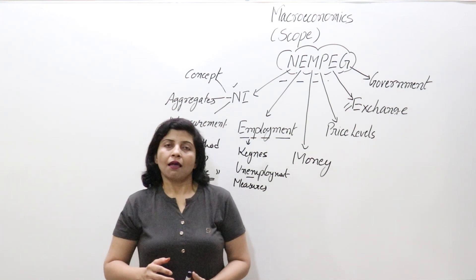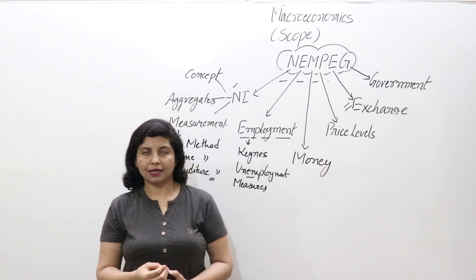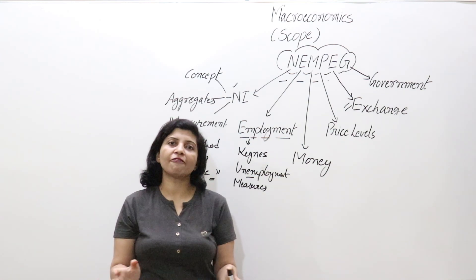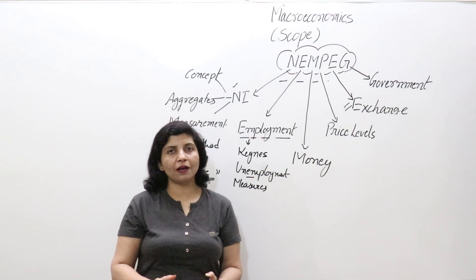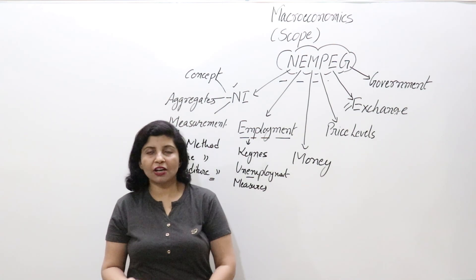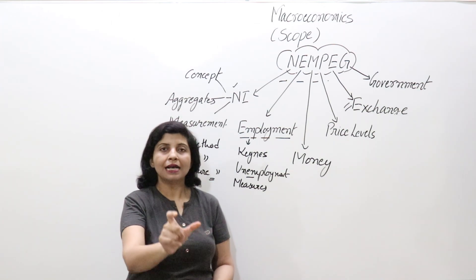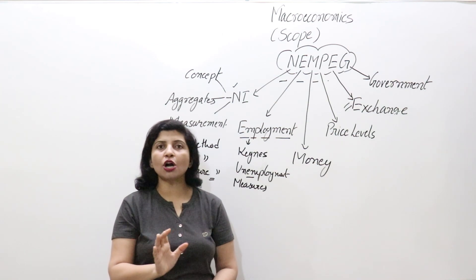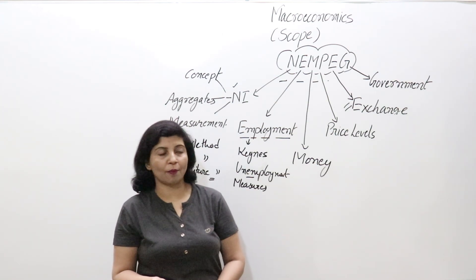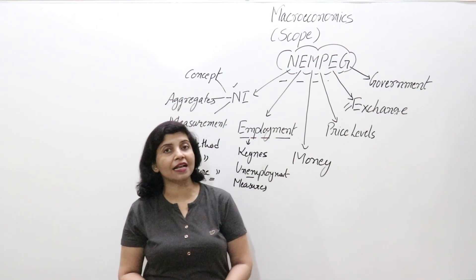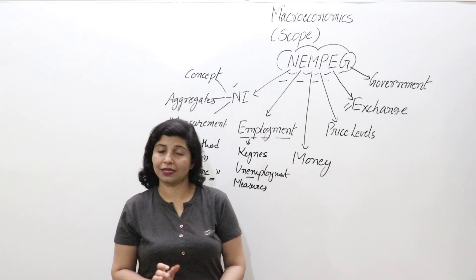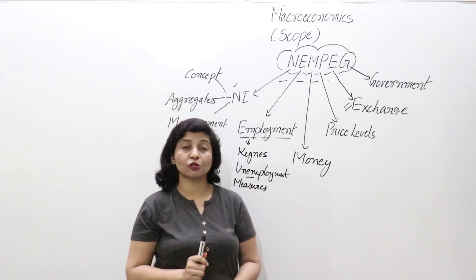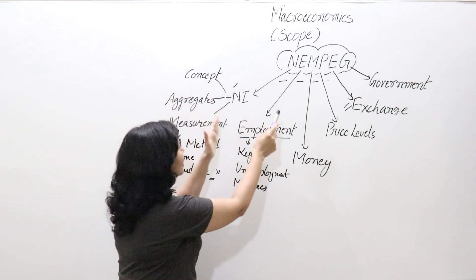Different types of unemployment are also discussed, such as disguised unemployment — for example, when only one labor is required to dig a small pit but four or five are employed; the additional workers are 'hidden,' hence called hidden unemployment. We also study cyclical unemployment (due to business cycles), frictional unemployment, and structural unemployment, all in detail under the theory of employment.